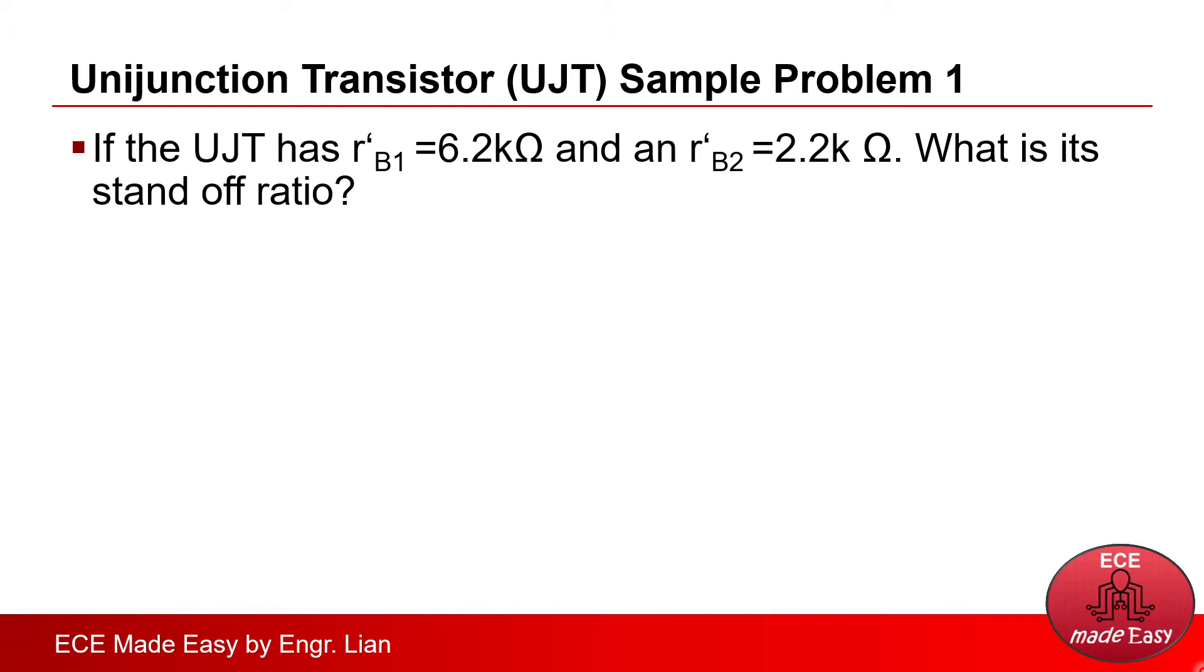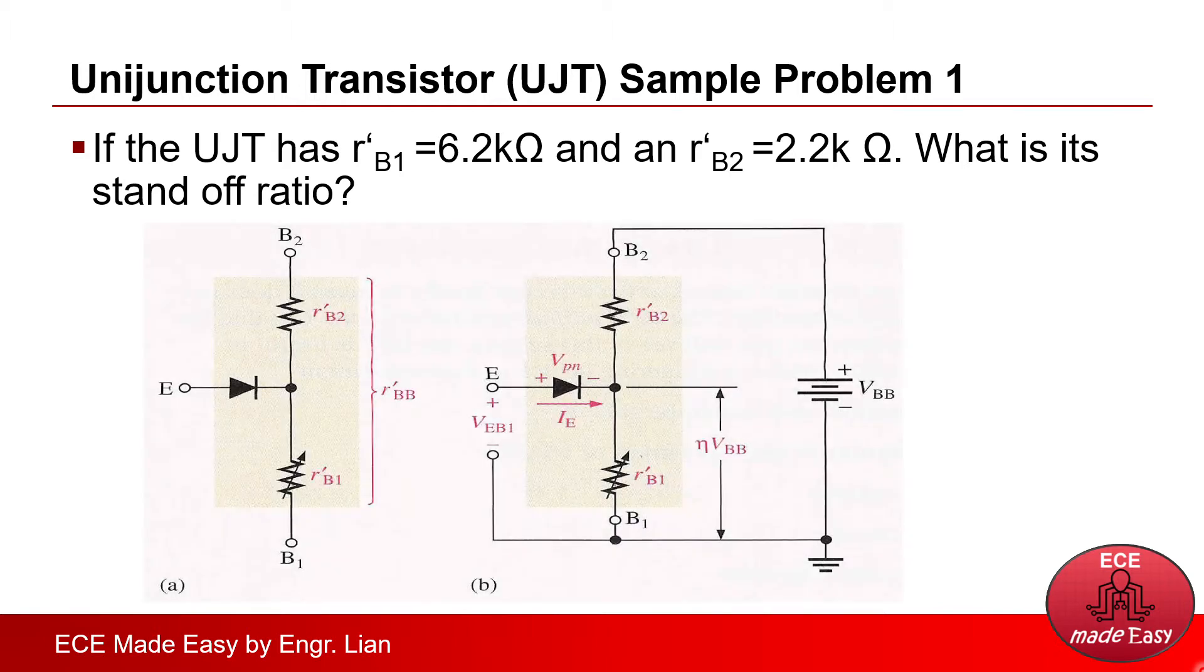So, to recall this concept, here is the equivalent circuit diagram of a UJT. Recall that inside the UJT, there's an equivalent two resistors here, RB2 and RB1.